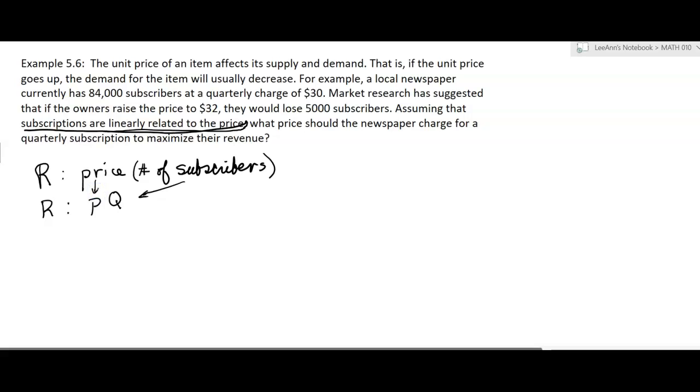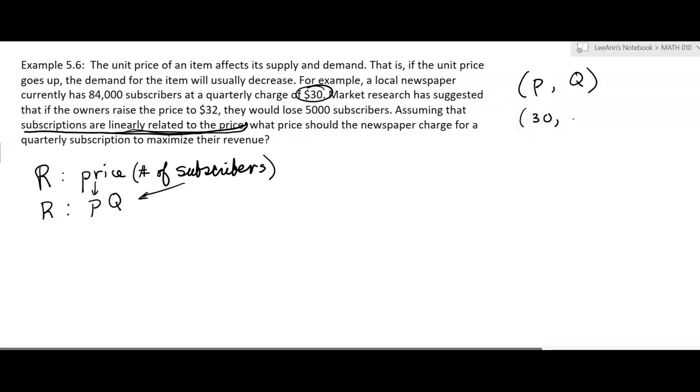Now we have to go back to this idea of things being linearly related. So we know the price. If the price is $30, I'm going to do an ordered pair of price and subscribers. That's what's linearly related, how many subscriptions we have in the price. We know when the price is $30, the subscribers are 84,000. And when the price goes to $32, then we lose 5,000, so that's going to be 79,000. Those are two ordered pairs where we're talking about price and subscriptions. So if you wanted to draw a little graph, as the price is increasing, so if this is P and this is Q, as the price goes up, subscriptions go down. So it's a linear function like that.